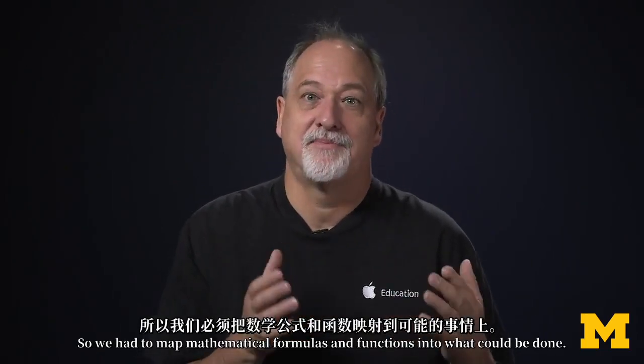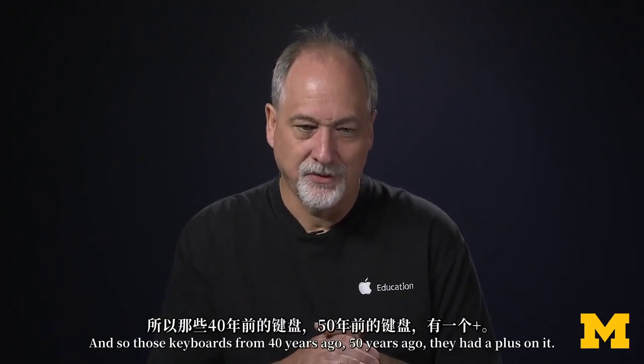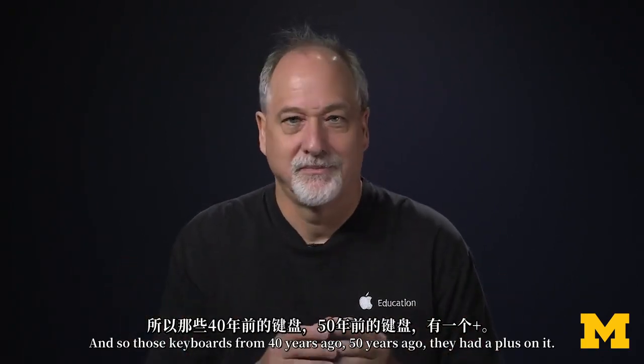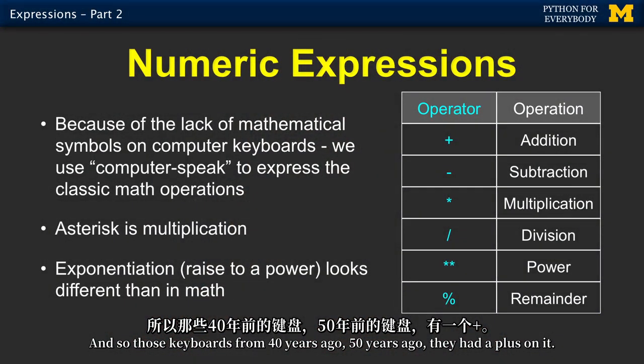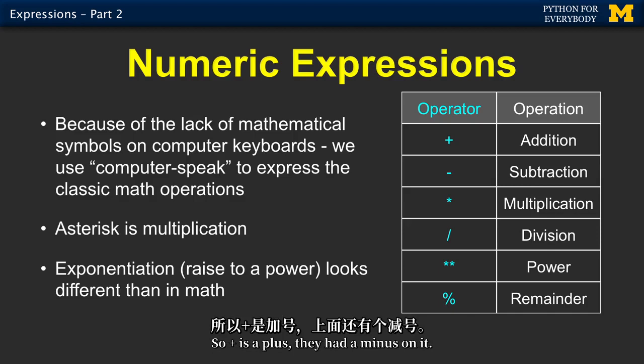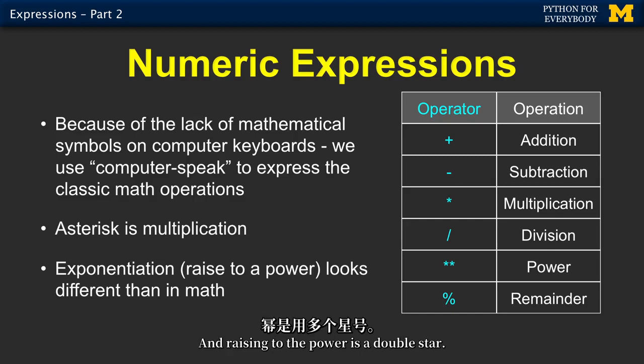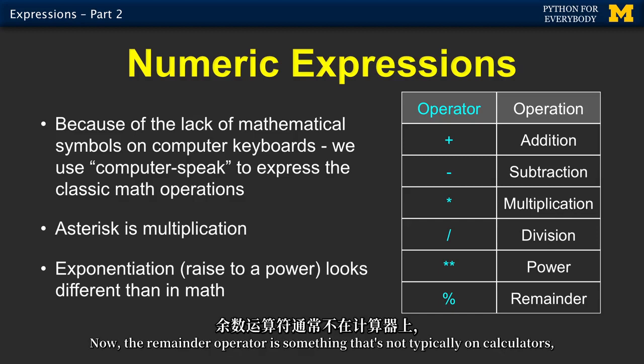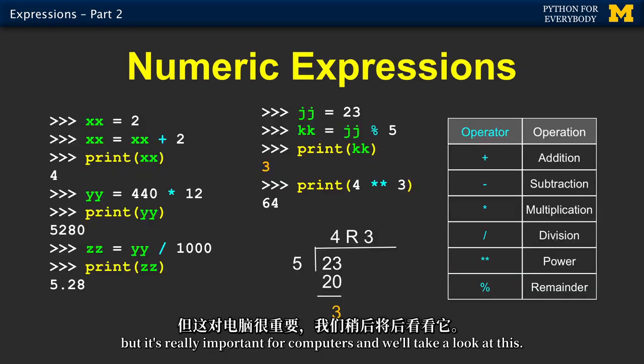So we had to map mathematical formulas and functions into what could be done. Those keyboards from 40 years ago, 50 years ago, they had a plus on it, so plus is plus. They had a minus on it, but multiplication, which is normally cross, is star. And division, which you can't put things on top of one another, so you just made a slash for division. And raising to the power is double star. Now the remainder operator is something that's not typically on calculators, but it's really important for computers.